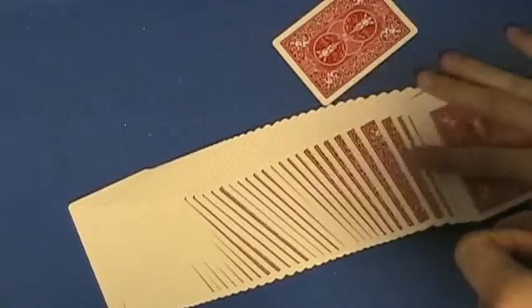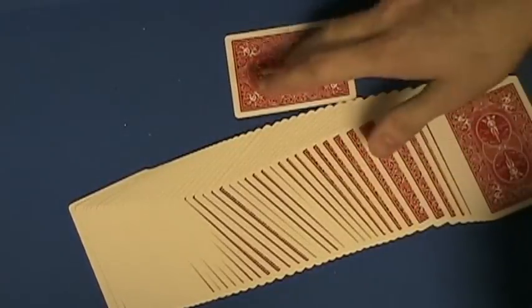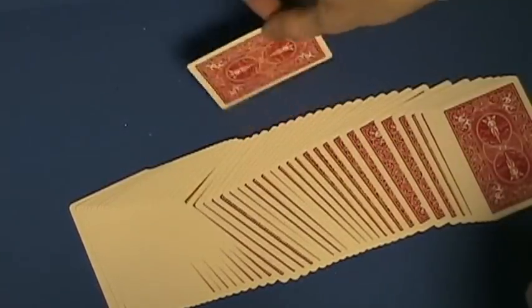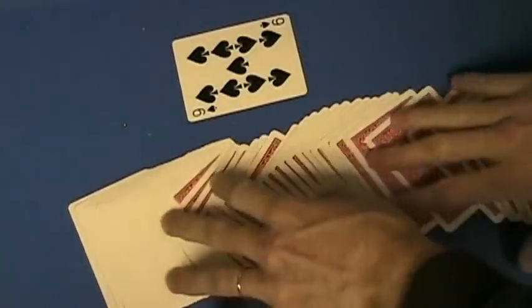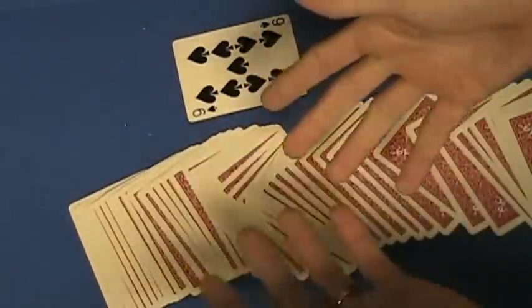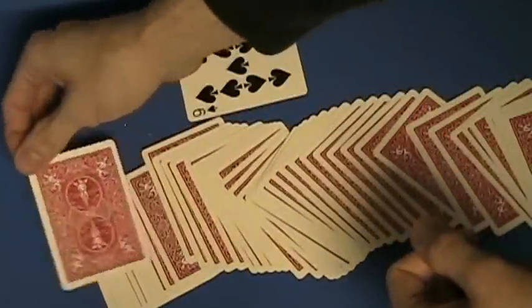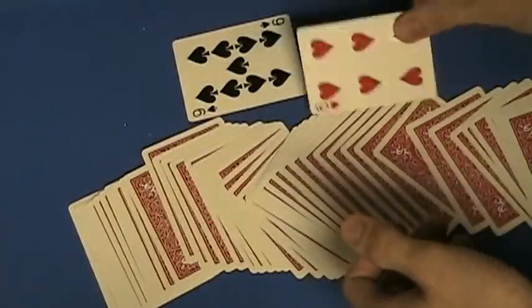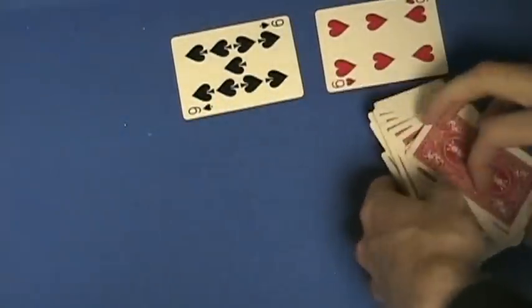So spread through the deck again. Alright, take out the Nine of Spades. I'll leave this face up. Take out the Nine of Spades. They wouldn't know that, because you're the only one who looked at it. They take out another card. Alright. Six of Hearts.